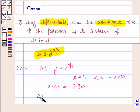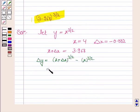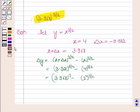Now we know that delta y is equal to f of x plus delta x minus f of x. So this is x plus delta x to the power 3 by 2 minus x to the power 3 by 2. Now x plus delta x is 3.968 to the power 3 by 2 minus x to the power 3 by 2. Now this is 3.968 to the power 3 by 2 minus 4 can be written as 2 square.